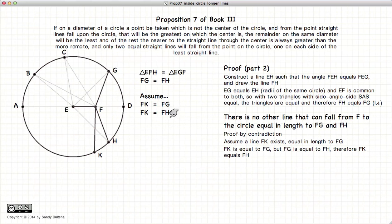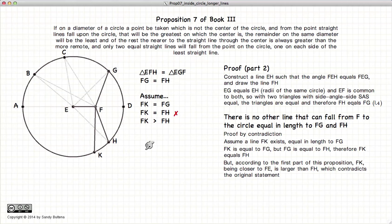However, we've just demonstrated within this proposition that FK has to be larger than FH since it's closer to the center of the circle. And thus we have our contradiction. And having our contradiction, it means that there is no line FK that can be equal in length to FG. And thus we have demonstrated that there can be one and only one other line that is equal to FG coming from F. And that would be FH.